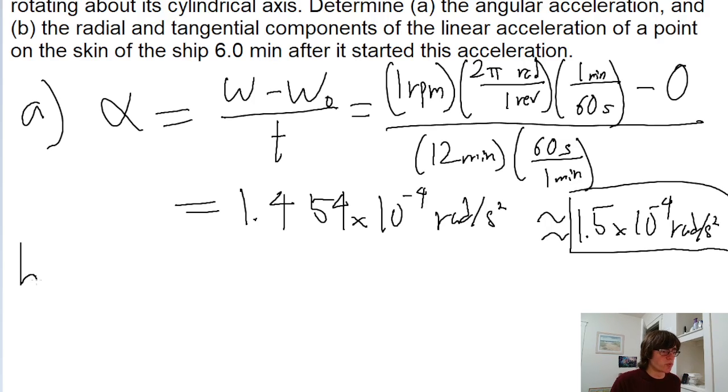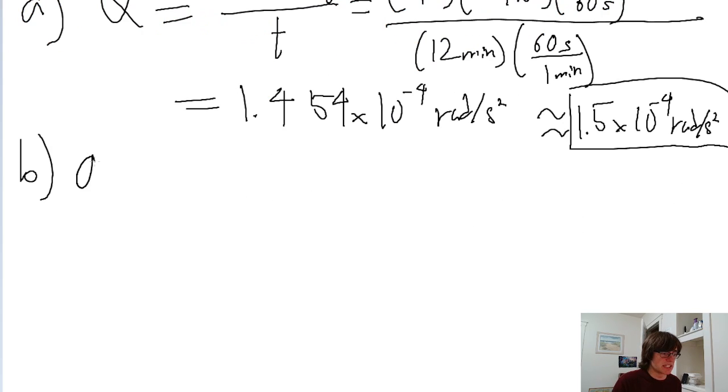Now part B asks for the radial and tangential components of the linear acceleration six minutes after the acceleration started. The tangential component is pretty easy to find. The tangential component of linear acceleration equals the angular acceleration multiplied by the radius.